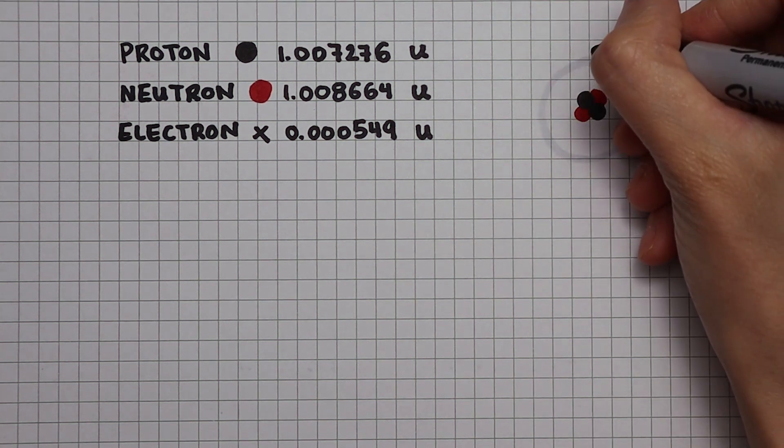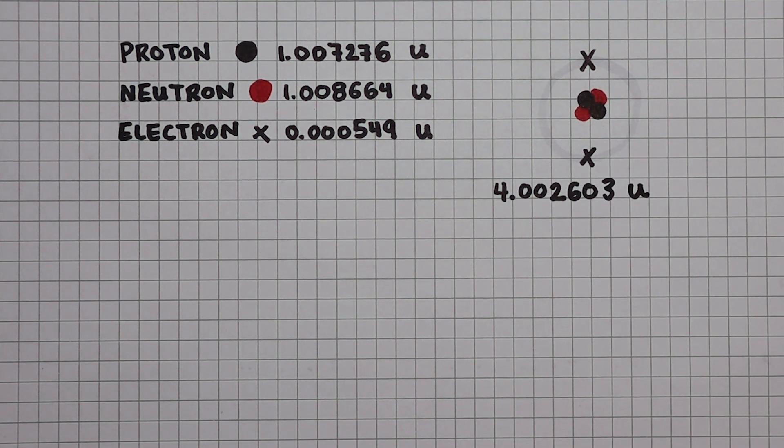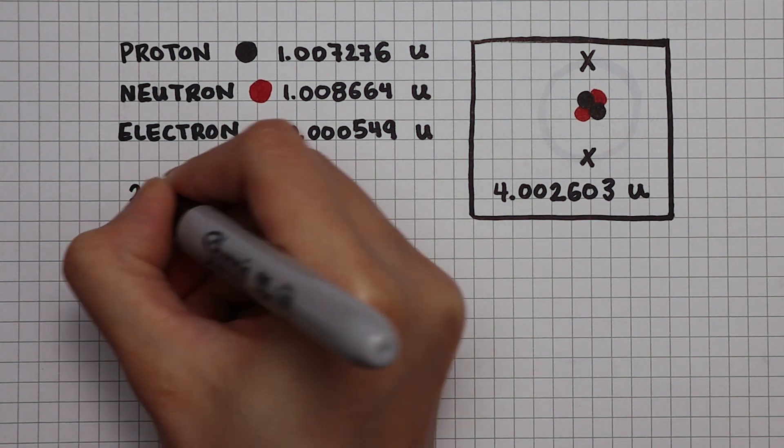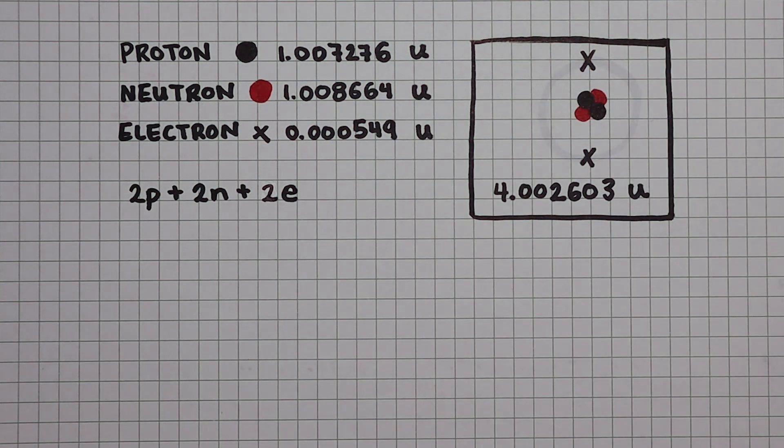If I weigh a helium atom, I will get a reading of this. Does this agree with my data? Let's find out. A helium has 2 protons, 2 neutrons, and 2 electrons.